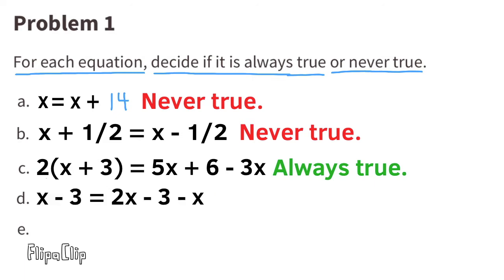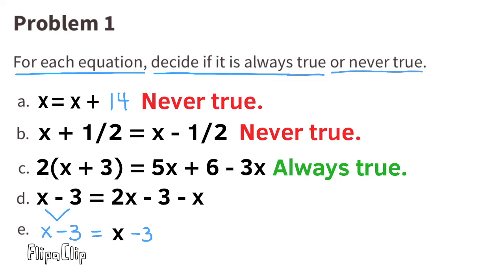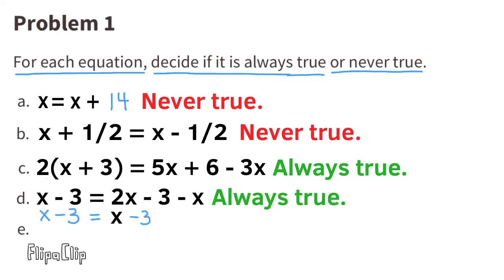D: X minus 3 equals 2X minus 3 minus X. Collect the X's on the right-hand side. X is the same thing as 1X, so we have 2X minus 1X, and that's 1X, or X. Bring down the minus 3, and the equation now reads X minus 3 equals X minus 3, and that's always true.